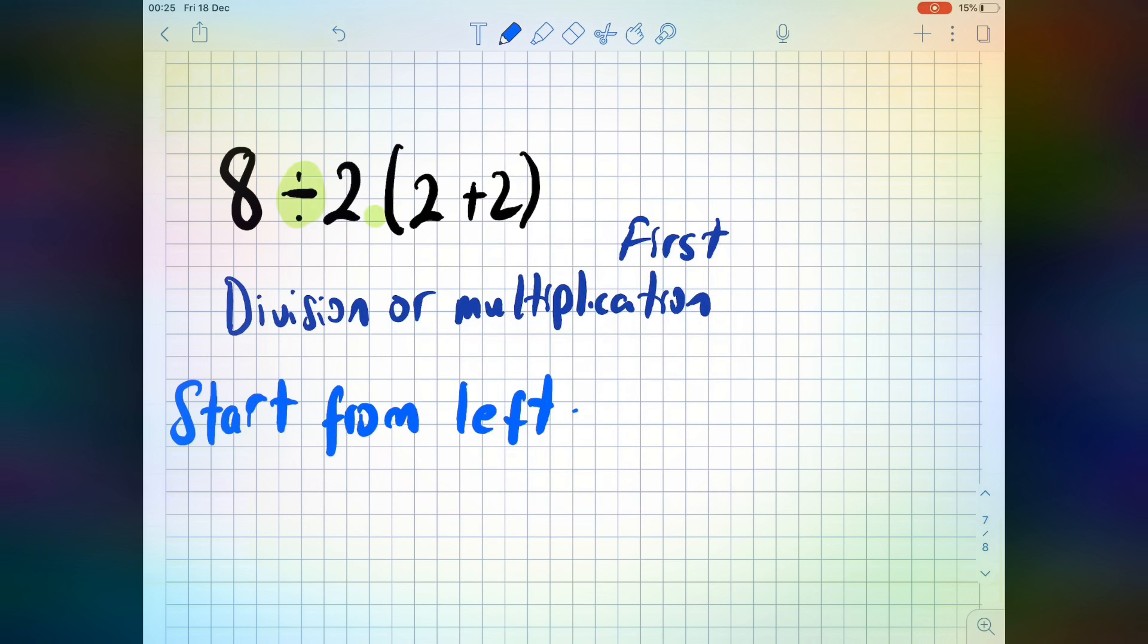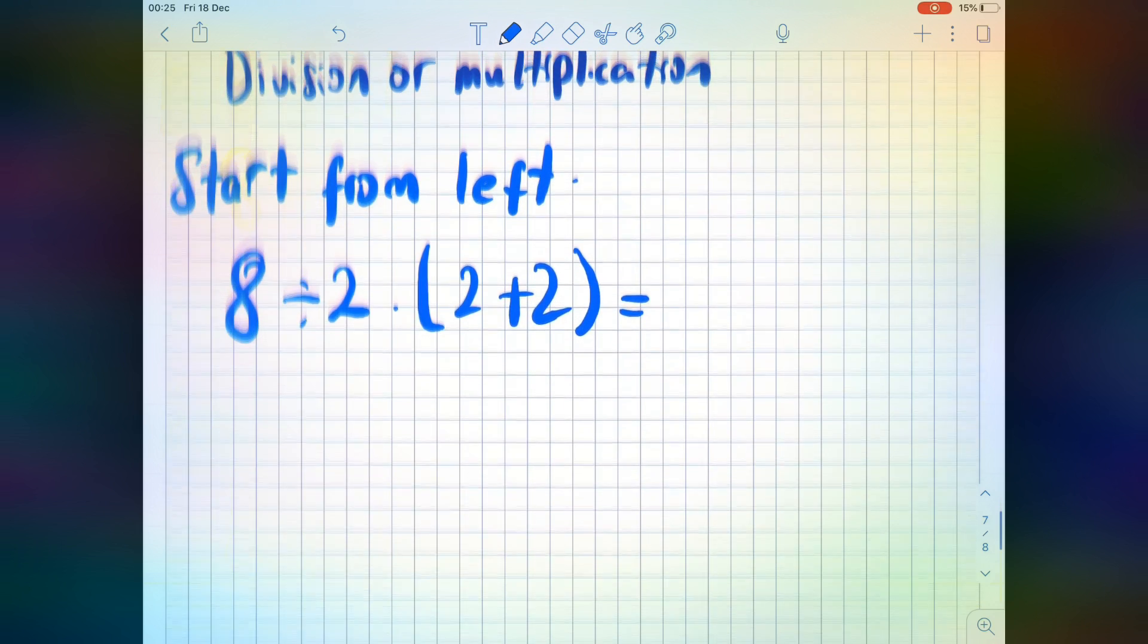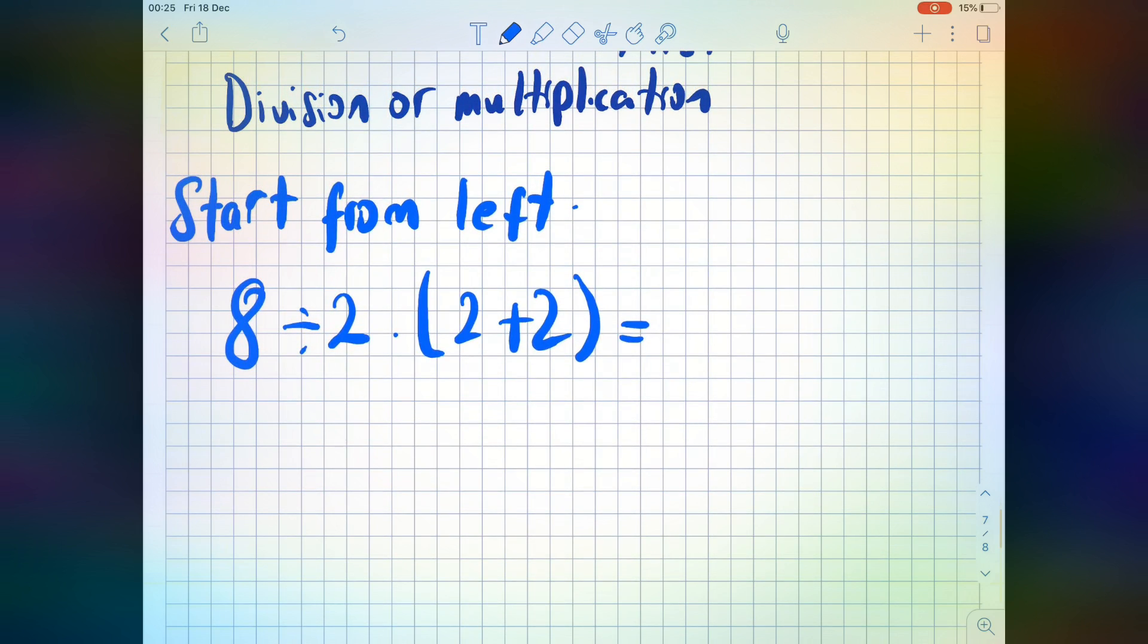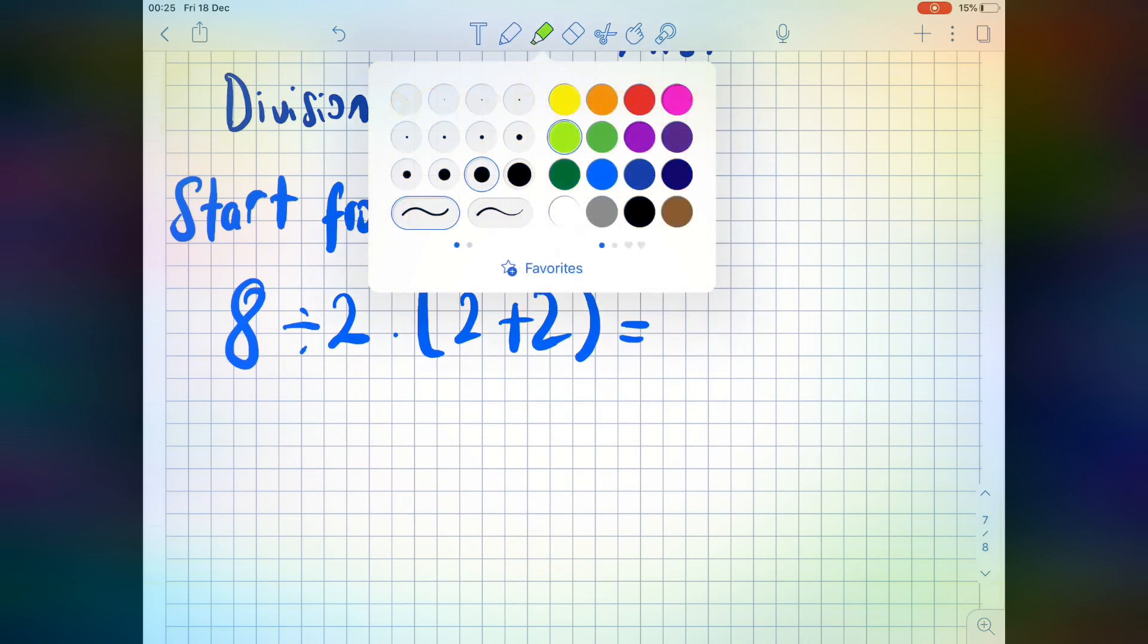So I'm going to start from left: 8÷2×(2+2). Let me write it down again. Look at that please, 8÷2, I'm going to handle this first.